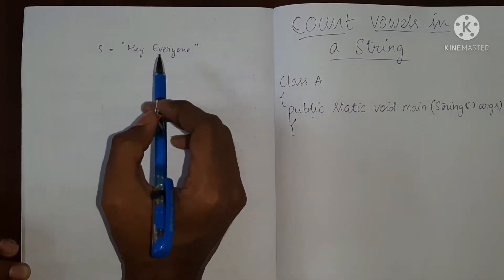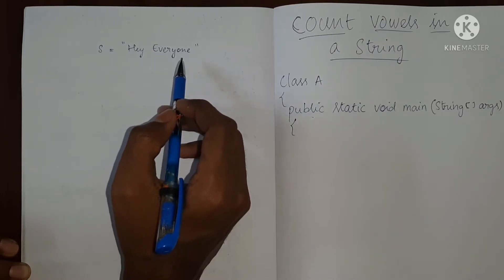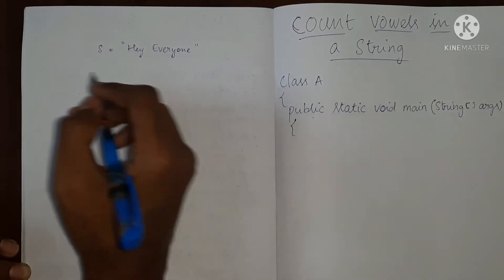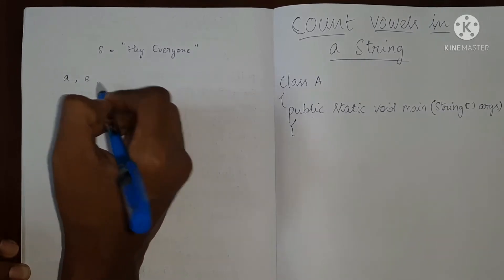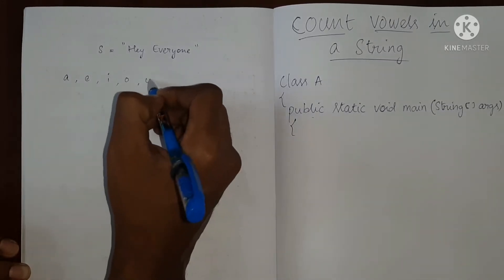We have to count the number of vowels in this sentence. So, let me write down all the vowels, we have A, E, I, O and U.